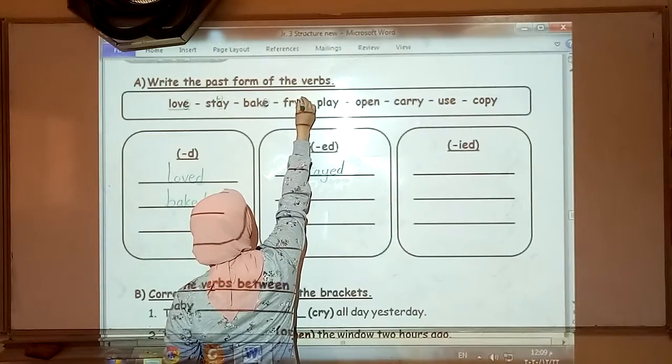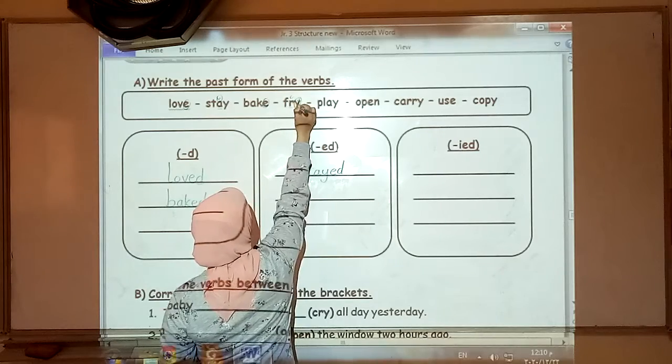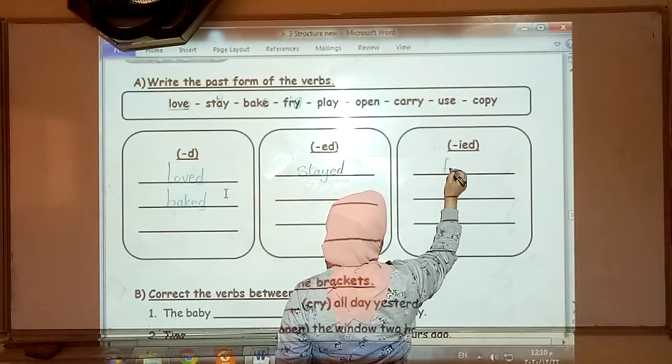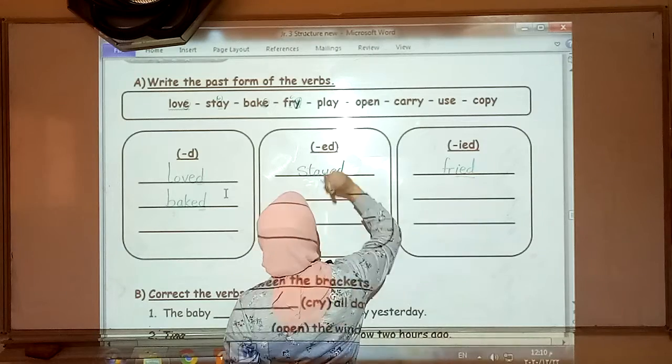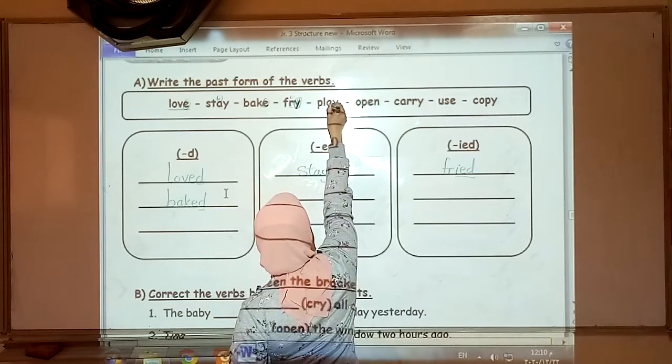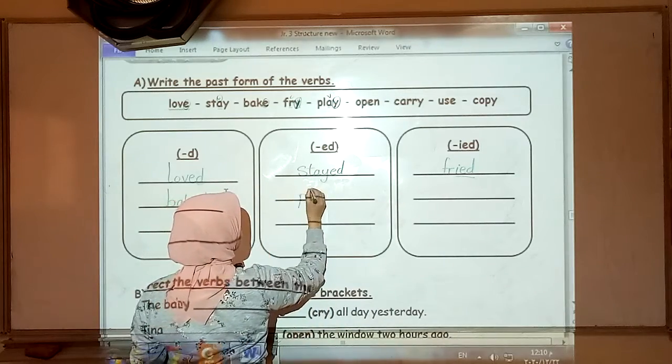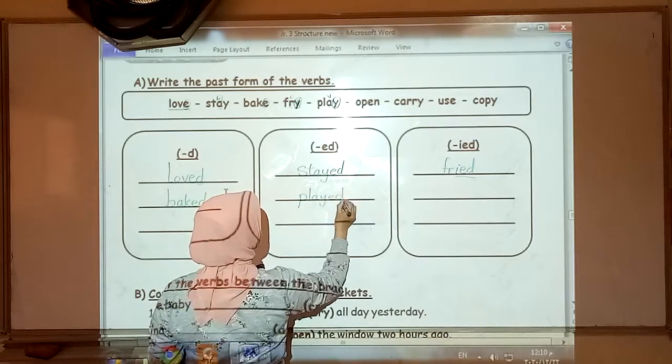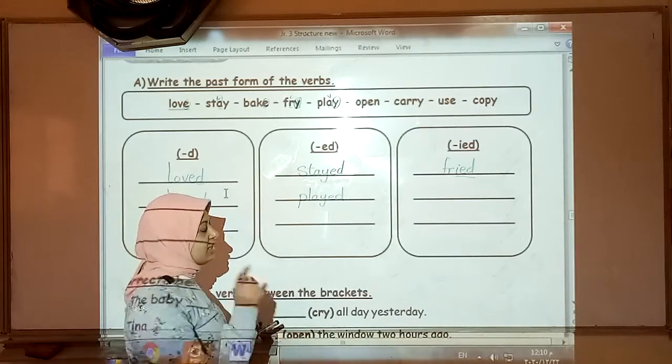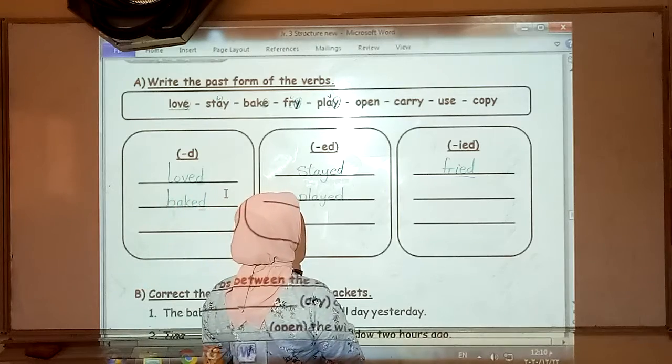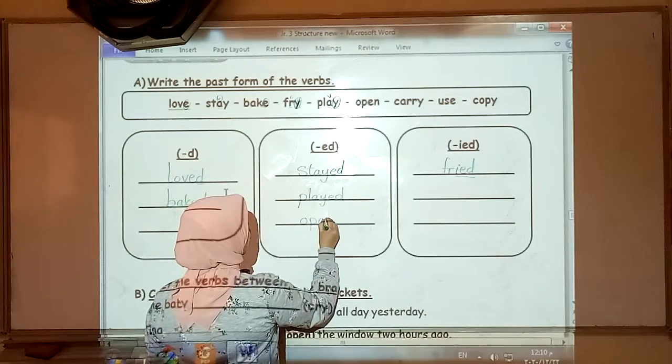Fry. Ends in Y. Before the Y we have a consonant. Cross. So it will be fried. Play ends in Y with a vowel before it, so we keep the Y and add ED. Played. Open is a CVC verb, but it's one of the eight exceptions CVC verbs. So we are going to add ED directly. Opened.